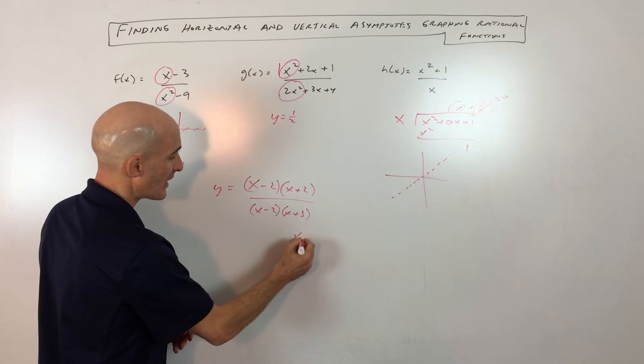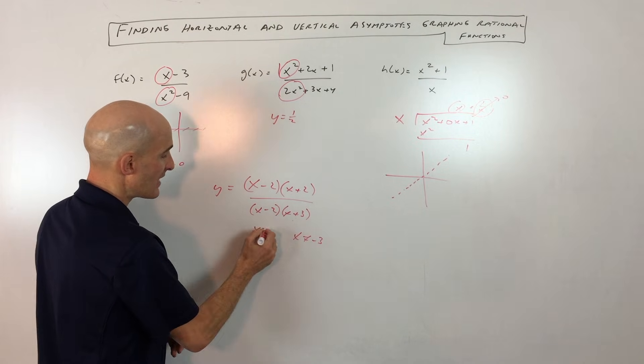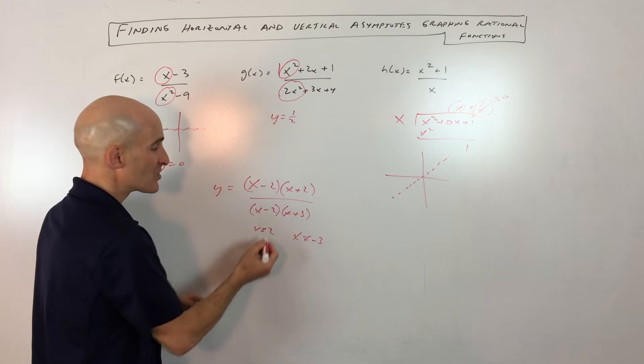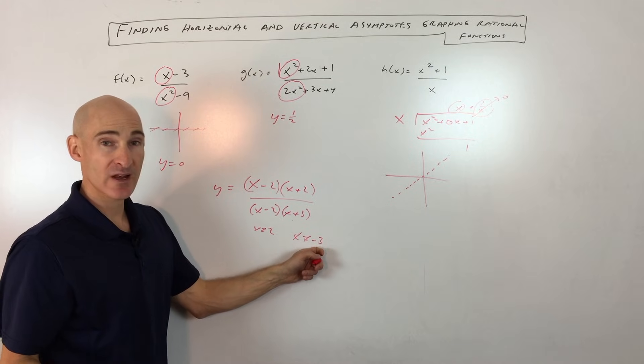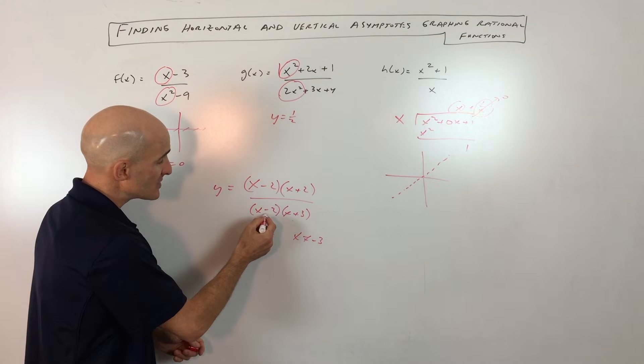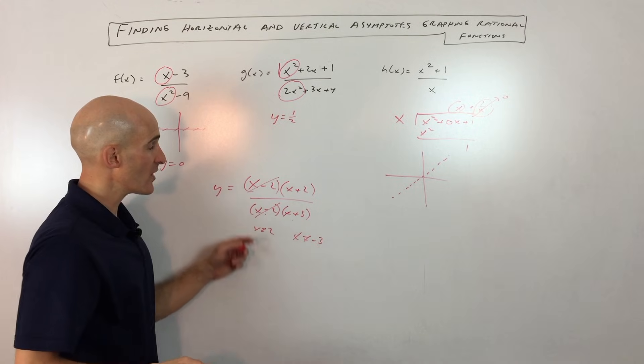be negative 3. x cannot be negative 3, and x cannot be 2. And you might jump to the conclusion, a lot of students do, that we have a vertical asymptote at 2 and a vertical asymptote at negative 3. But because this term in the denominator is canceling with this term in the numerator,